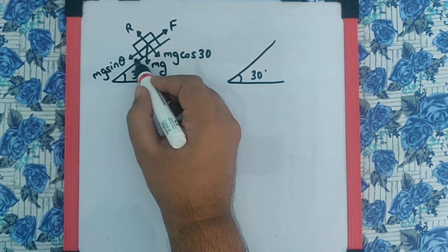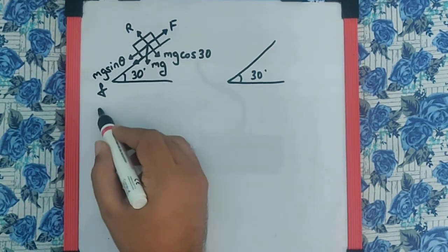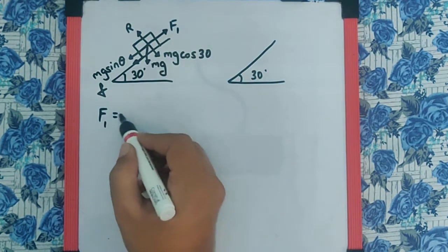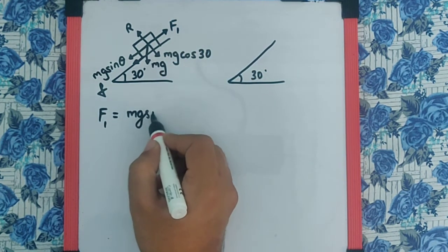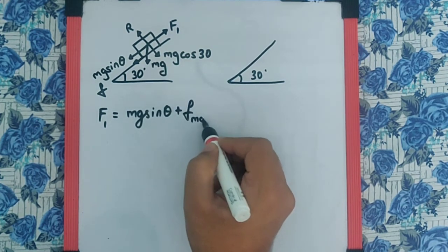And the friction will be acting downwards. So I can say here the force required to take it up, let's call it F₁, is going to be mg sin θ plus the friction, for which we can take it as the maximum value.